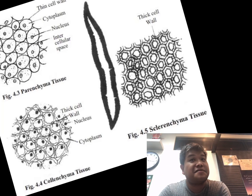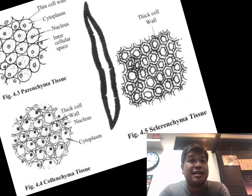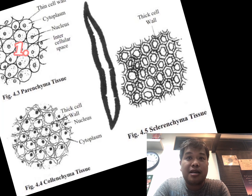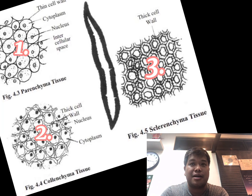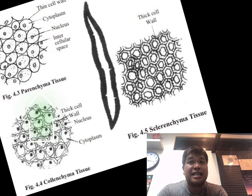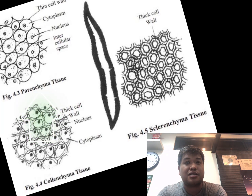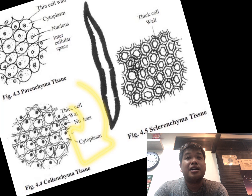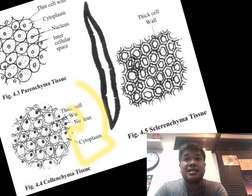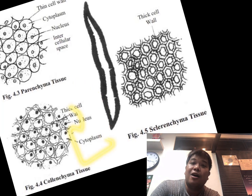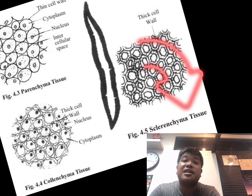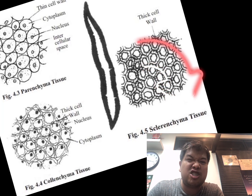There are three types of simple permanent tissues: parenchyma, colenchyma, and sclerenchyma. Parenchyma are living cells with thin cell walls. Colenchyma are living cells that have an elongated shape, while sclerenchyma are dead tissues.